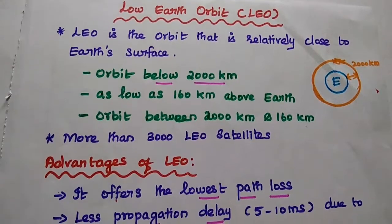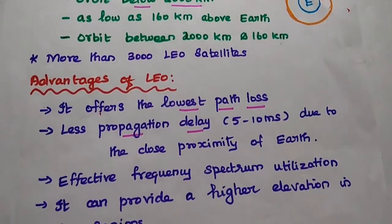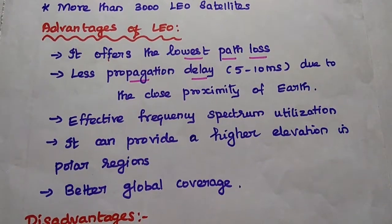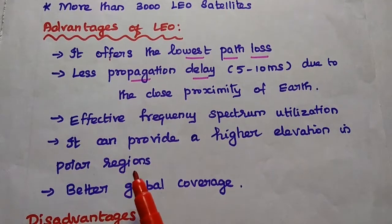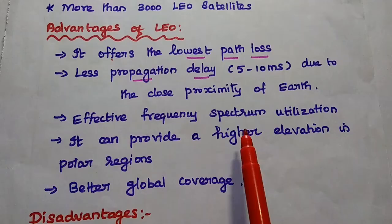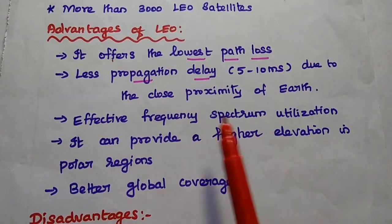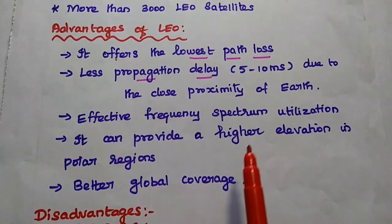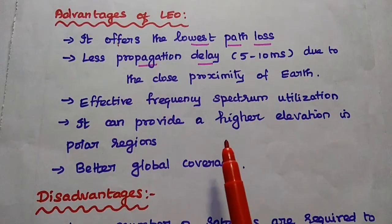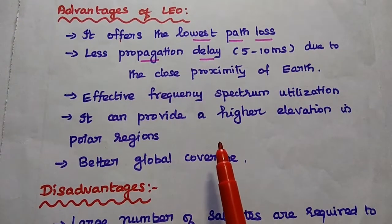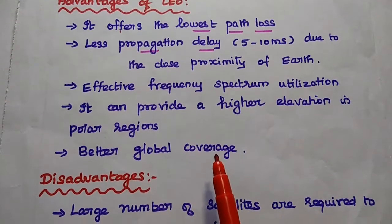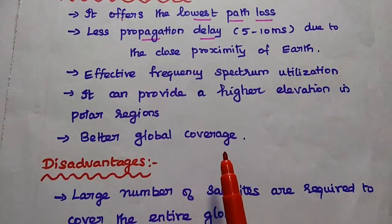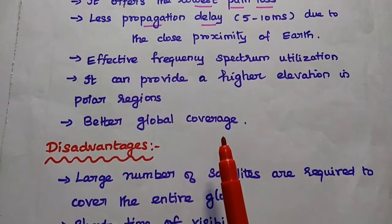There are more than 3000 LEO satellites available in our satellite communication systems for various applications. The major advantages of LEO: it offers the lowest power class when compared with MEO and GEO. Due to the close proximity of earth, it provides less propagation delay — it is around 5 to 10 milliseconds. The frequency spectrum is effectively utilized, and it can provide higher elevation in polar regions and better global coverage.